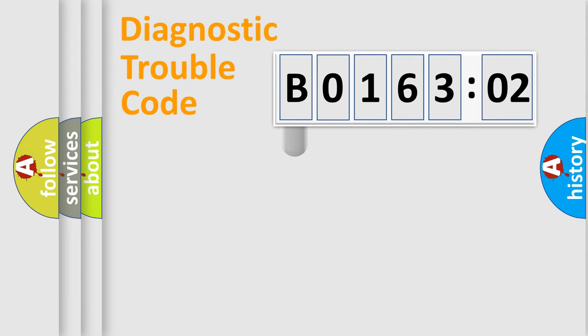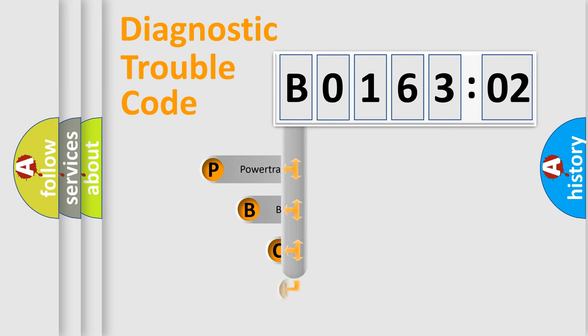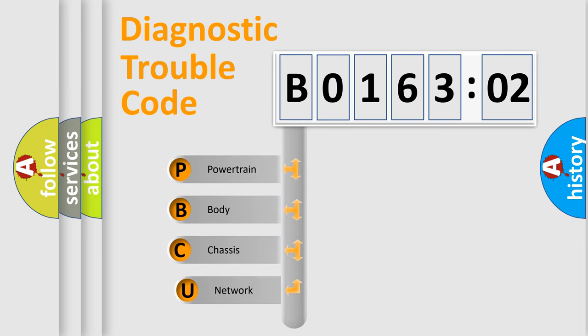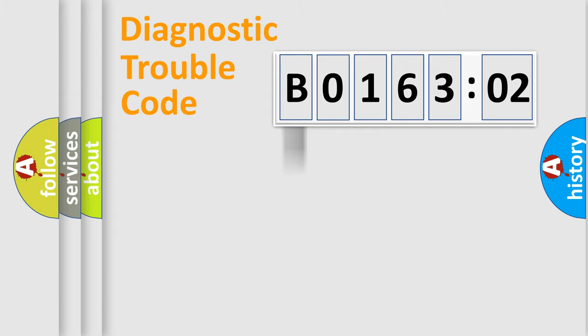First, let's look at the history of diagnostic fault code composition according to the OBD2 protocol, which is unified for all automakers since 2000. We divide the electric system of an automobile into four basic units: Powertrain, Body, Chassis, and Network.